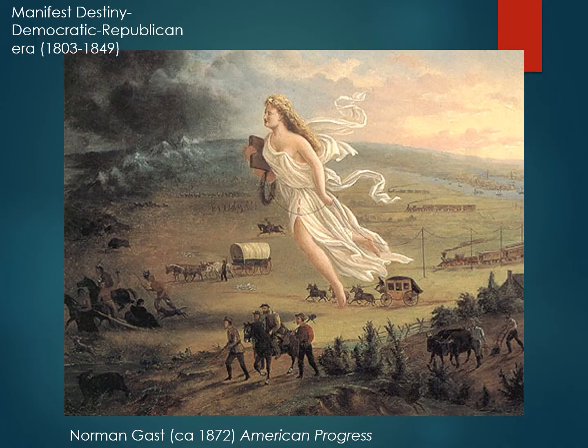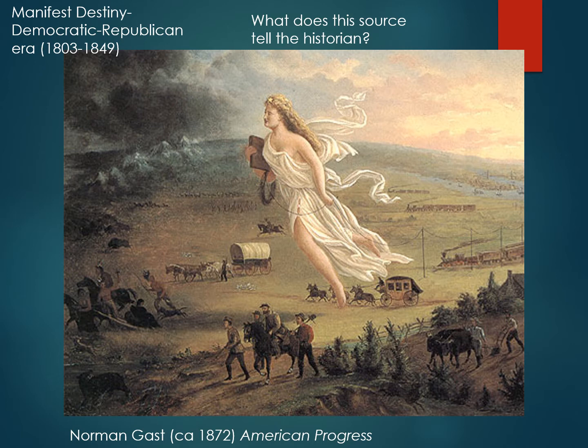So first, I want you to take a look at this painting by Norman Gast — a 1872 painting titled American Progress. It's depicting manifest destiny of the Democratic-Republican era, running from Thomas Jefferson through President James K. Polk. Take a look at this and think to yourself: what does this piece of artwork symbolize? What does it communicate to you? What do you see here?